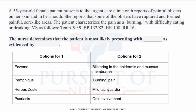This first question is a drop-down style question that will test your knowledge of physiological integrity. A 55-year-old female patient presents to the urgent care clinic with reports of painful blisters on her skin and in her mouth. She reports that some of the blisters have ruptured and formed painful sore-like areas. The patient characterizes the pain as a burning with difficulty eating and drinking. Her temp is 99.9, BP is 132 over 82, heart rate is 108, and respiration rate is 16. The nurse determines that the patient is most likely presenting with blank, as evidenced by blank.